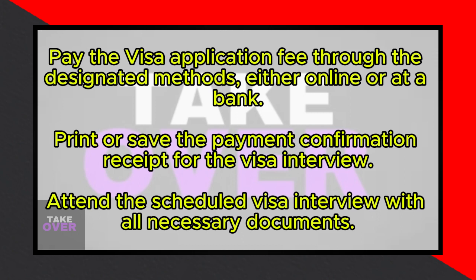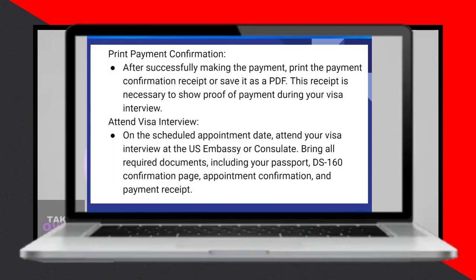Finally, attend your visa interview at the U.S. Embassy or Consulate, bringing along all required documents, including your passport, DS-160 confirmation page, appointment confirmation, and payment receipt. Here, let's go to the U.S. Embassy — now we're going to pay for our visa application.